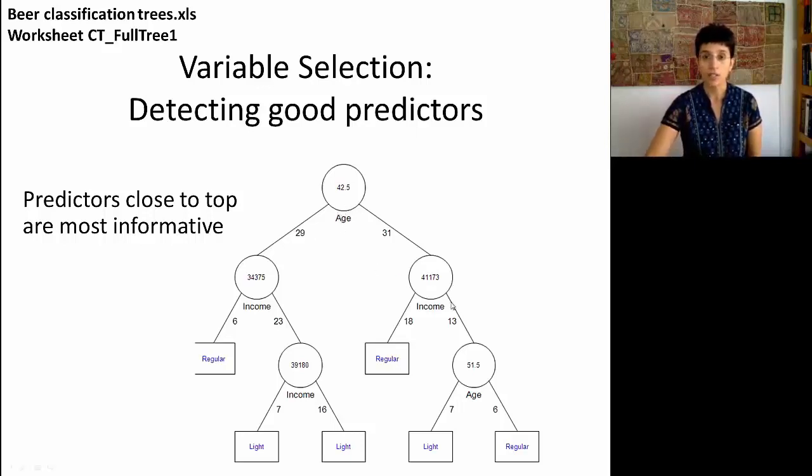Age in years and income. What we can see here is that not only do these two predictors show up, but that they show up multiple times. Age shows up at the first node and also later down, and income shows up at multiple places as well. In general, the tree might look a little bit bigger with more layers in it, but the predictors that show up at the very top layers are going to be the major predictors. So we can look at the tree and just by looking at the predictors that show up at the top of the tree, detect which are the most informative variables to keep.